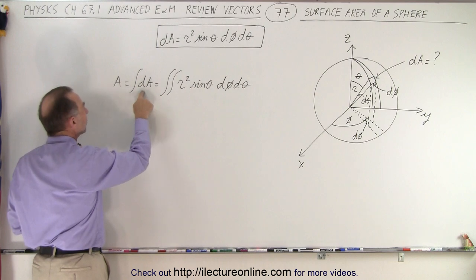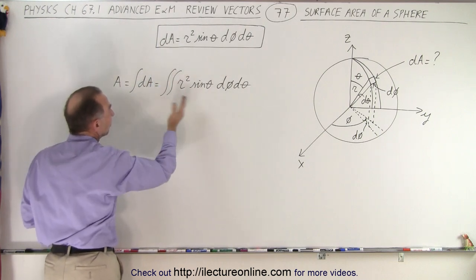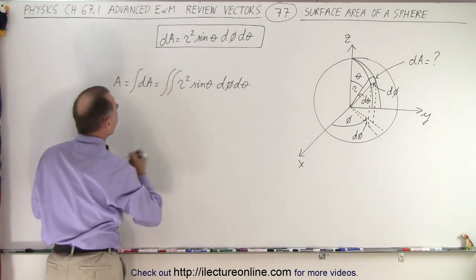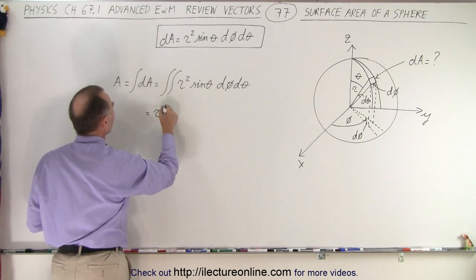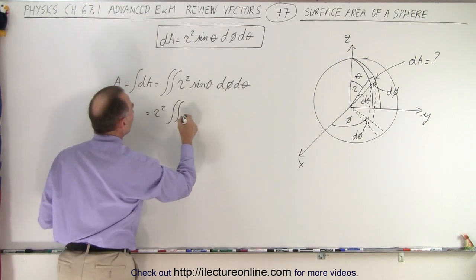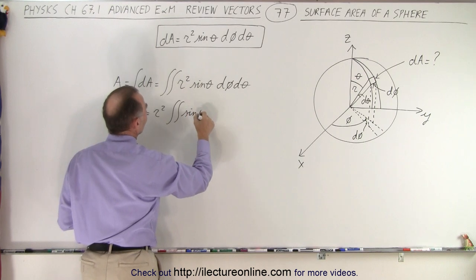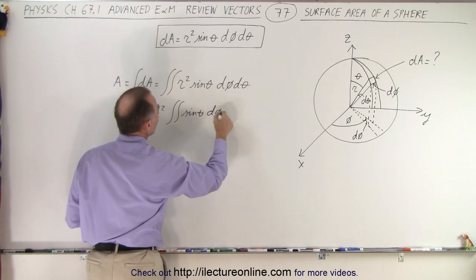So that means the r squared can actually come outside the integral sign. To find the area, it's an integral of dA. dA was defined as this, and so r can come outside the integral sign. So this becomes equal to r squared times the double integral of sine of theta d phi d theta.